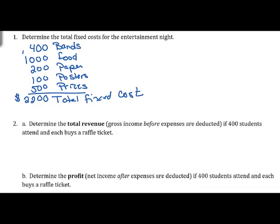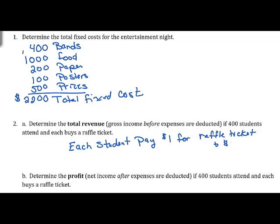Next we want to determine the total revenue — that's our gross income before expenses are deducted — if 400 students attend and each buys a raffle ticket. Raffle tickets were $1 and each student pays a $10 donation to get in, so that's $11 per student. With 400 students attending, that's 11 times 400, which equals $4,400.